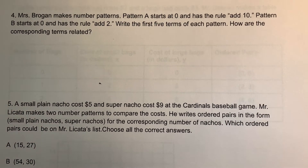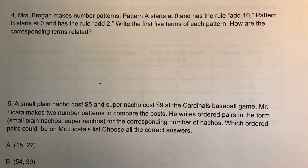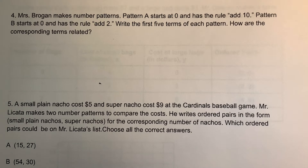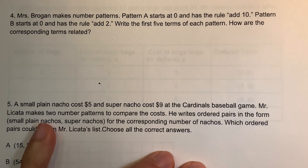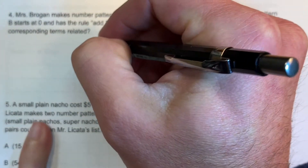Next, Miss Brogan makes number patterns. Pattern A starts at 0 with the rule add 10. Pattern B starts at 0 with the rule add 2. Write the first five terms of each pattern and describe how the corresponding terms are related. I'm going to start with A.